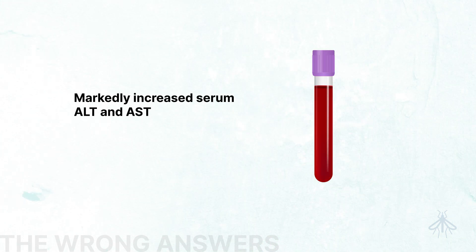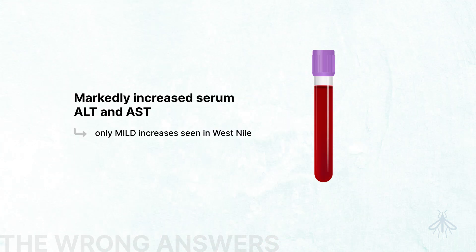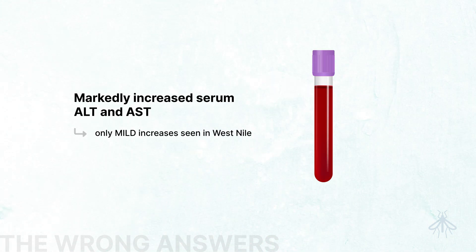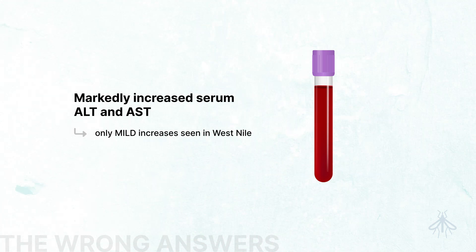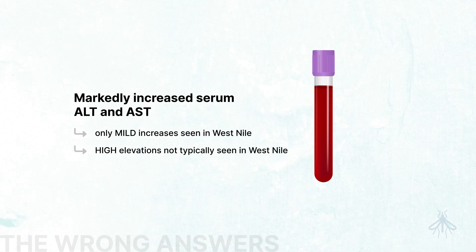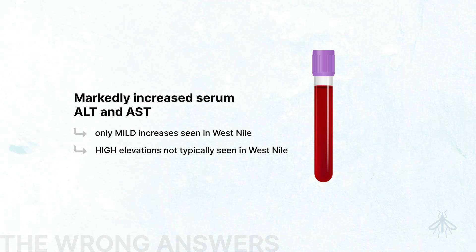A mildly increased ALT and AST may be seen in West Nile encephalitis, Epstein-Barr virus, Rocky Mountain spotted fever, and ehrlichiosis, but markedly elevated transaminases are not generally part of an arboviral infection.